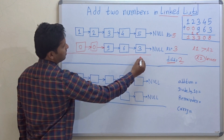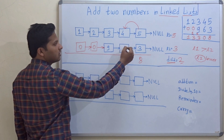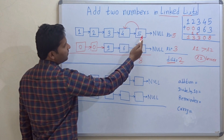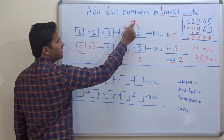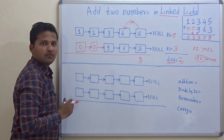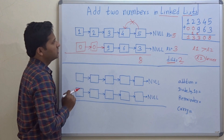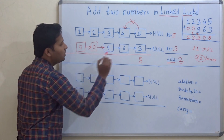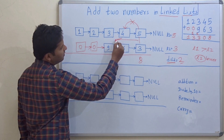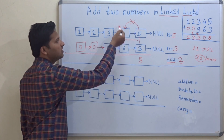So in our conventional way, 5 plus 3 is 8, and then 4 plus 6 — oh, there is a problem. In a singly linked list, we cannot move backward. We cannot do this. We cannot move backward in a singly linked list.